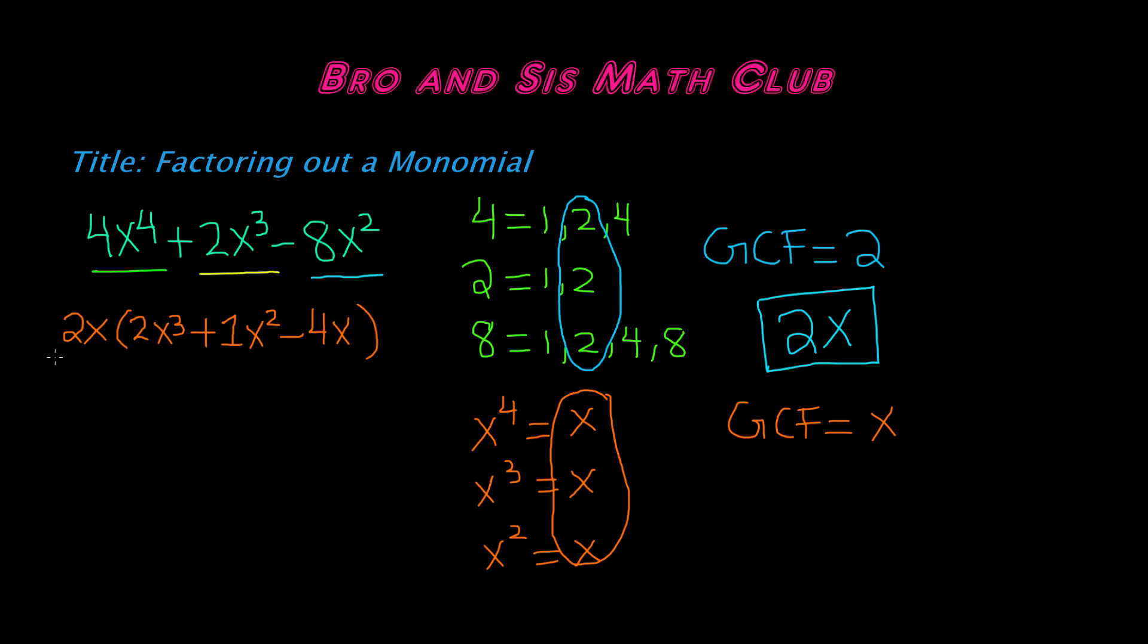So the factored out, if you factor out this polynomial, you get 2x and in parentheses you get 2x cubed plus 1x squared or simply x squared minus 4x. So